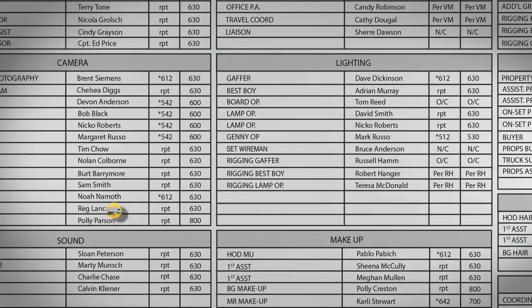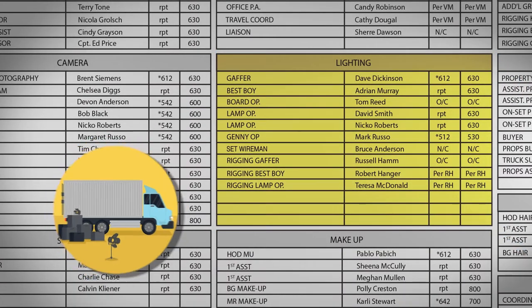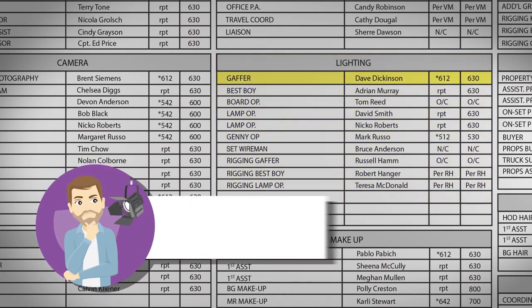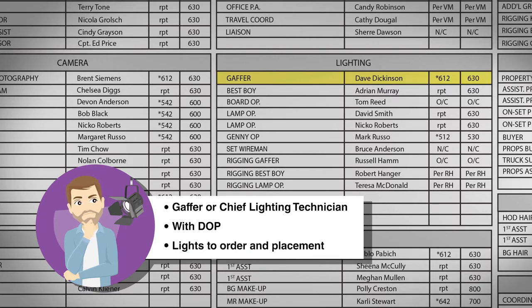The lighting department is responsible for lighting the shot and everything electrical. The gaffer, or chief lighting technician, works closely with the director of photography during production. They decide what lights to order and their placement, and the chief also provides the DOP with intensities and lighting ratios.